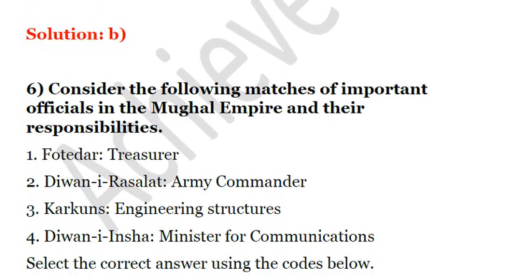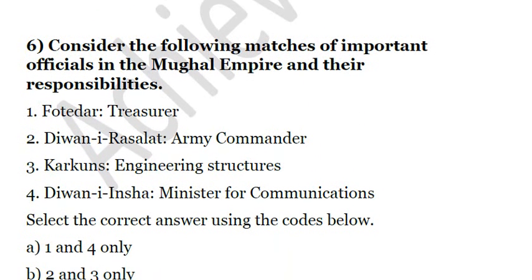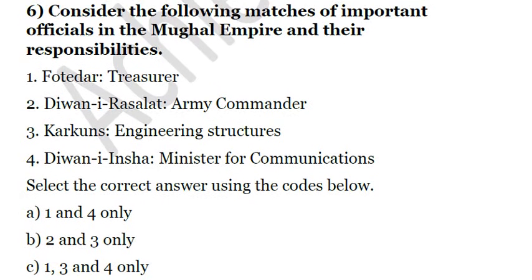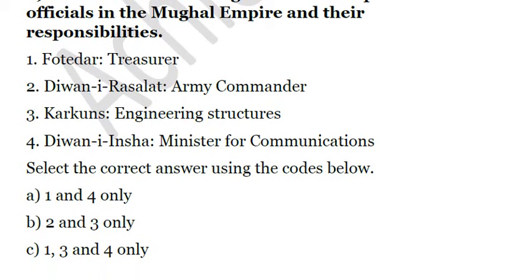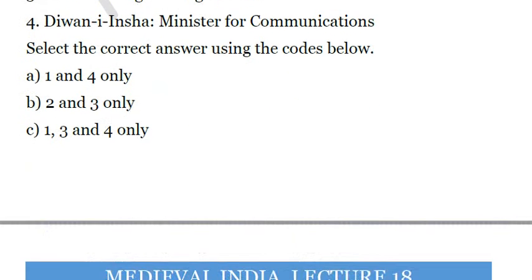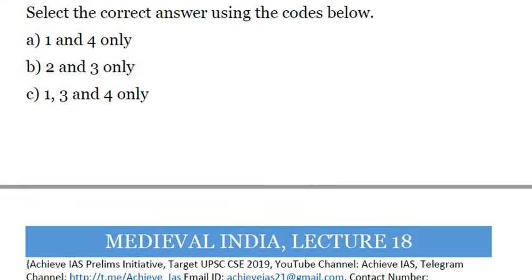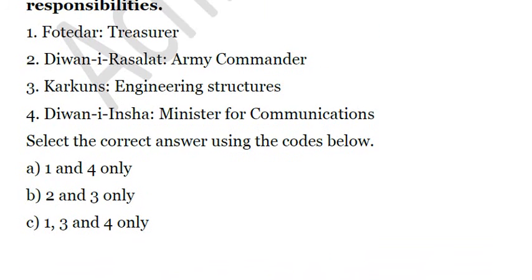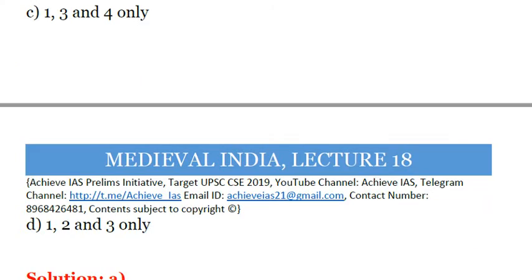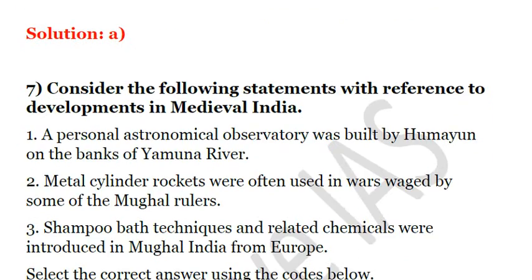The next question: consider the following matches of important officials in the Mughal Empire and their responsibilities. 1. Pottheadhar — Treasurer. 2. Diwan-i-Insha — Minister for Communications. The answer is A. The Pottheadhar was basically a treasurer, and the Diwan-i-Insha was the minister for communications.